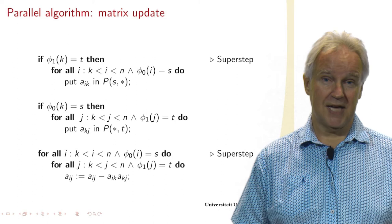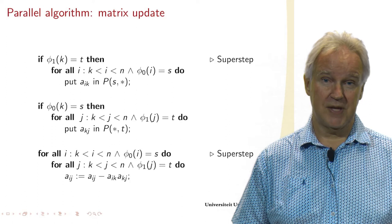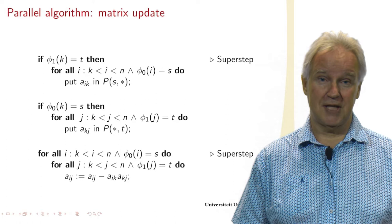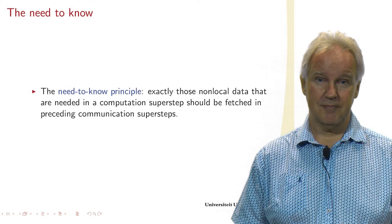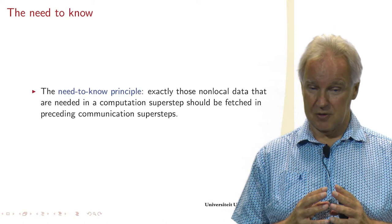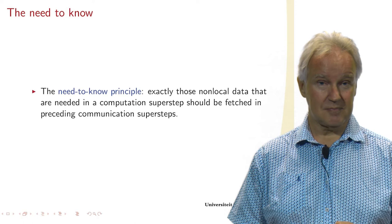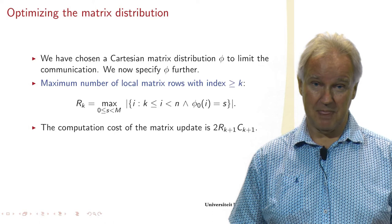So if we look at the statement at the top, then you see that we put AIK in all the elements of the processor row, and we do that for all the elements that are mine. And we do something similar in the second part of that superstep for the elements of a row. So we follow the need-to-know principle: we communicate exactly those non-local data that are needed in the following computation superstep.